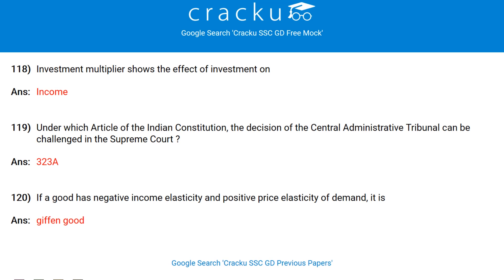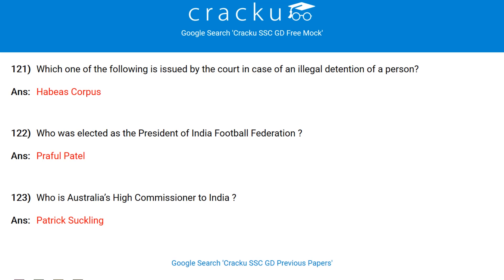Investment multiplier shows the effect of investment on income. Under which article of the Indian Constitution can the decision of the Central Administrative Tribunal be challenged in the Supreme Court? Article 323A. If a good has negative income elasticity and positive price elasticity of demand, it is called a Giffen good. Which of the following is issued by the court in case of illegal detention of a person? Habeas Corpus. Who was elected as the President of the Indian Football Federation? Praful Patel.